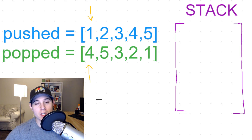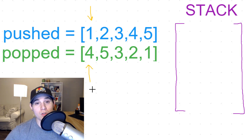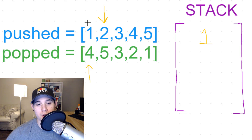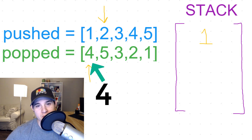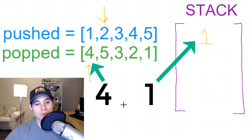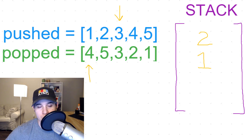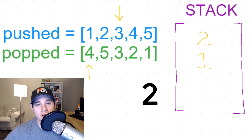We start pushing elements from the pushed array to the stack, and we only pop whenever the number we're looking at in popped is on the top of the stack. Our stack is empty so we push 1 and move our pushed pointer forward. We compare the current popped number, which is 4, with the top of the stack. 1 is not equal to 4, so we push the next number, 2, and move the pointer forward.